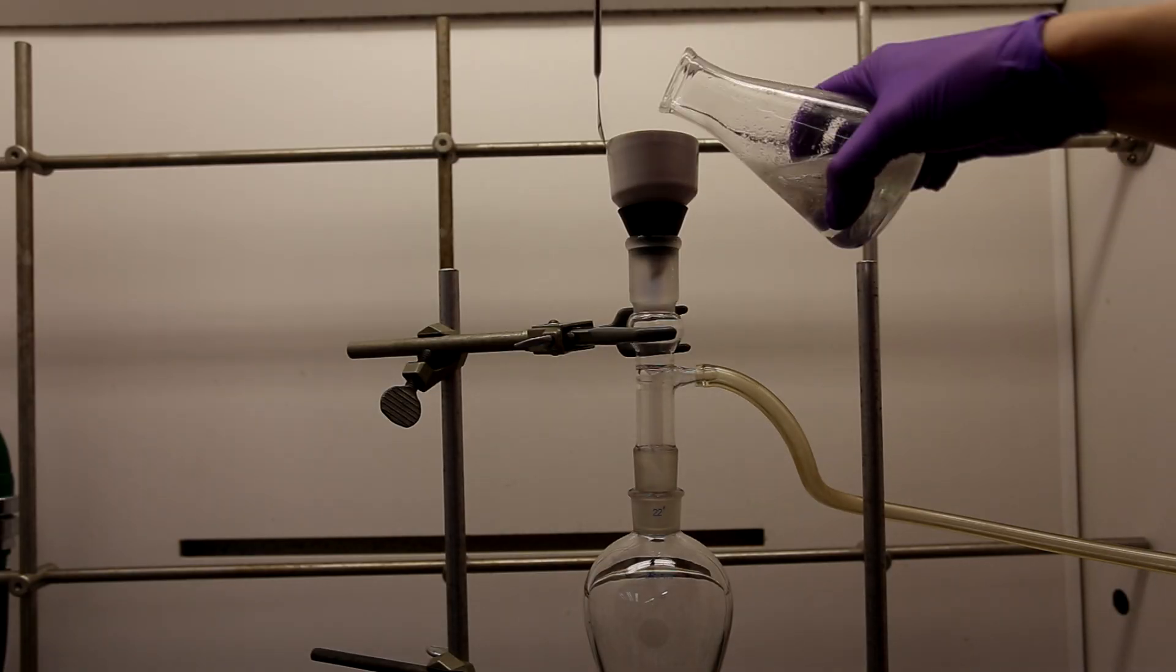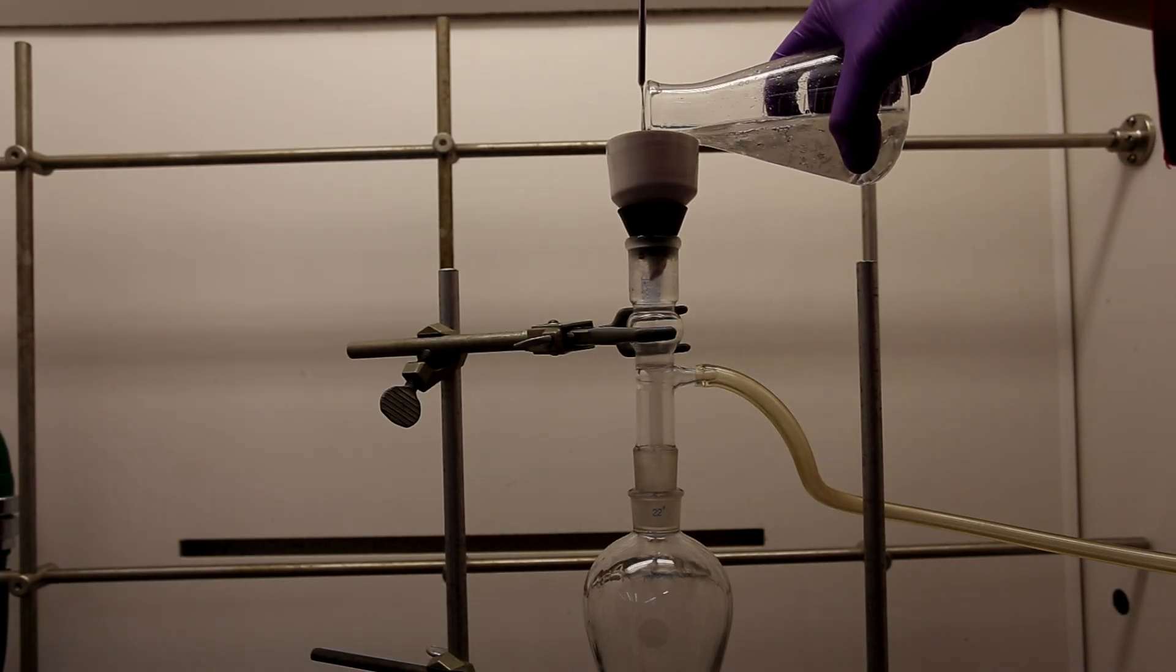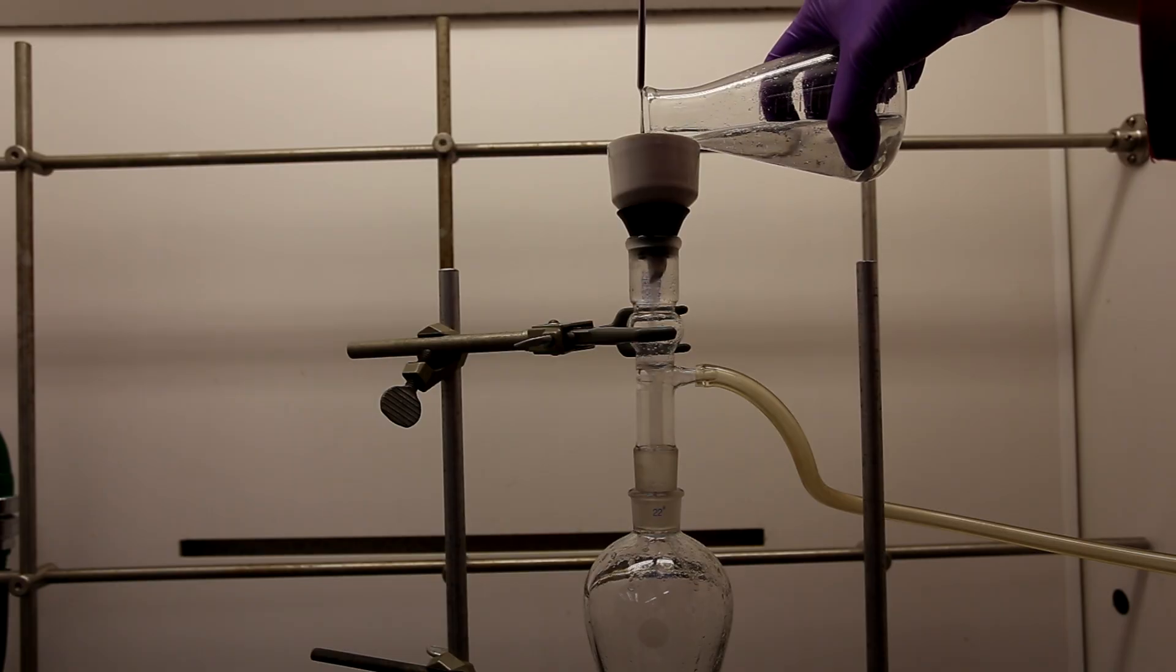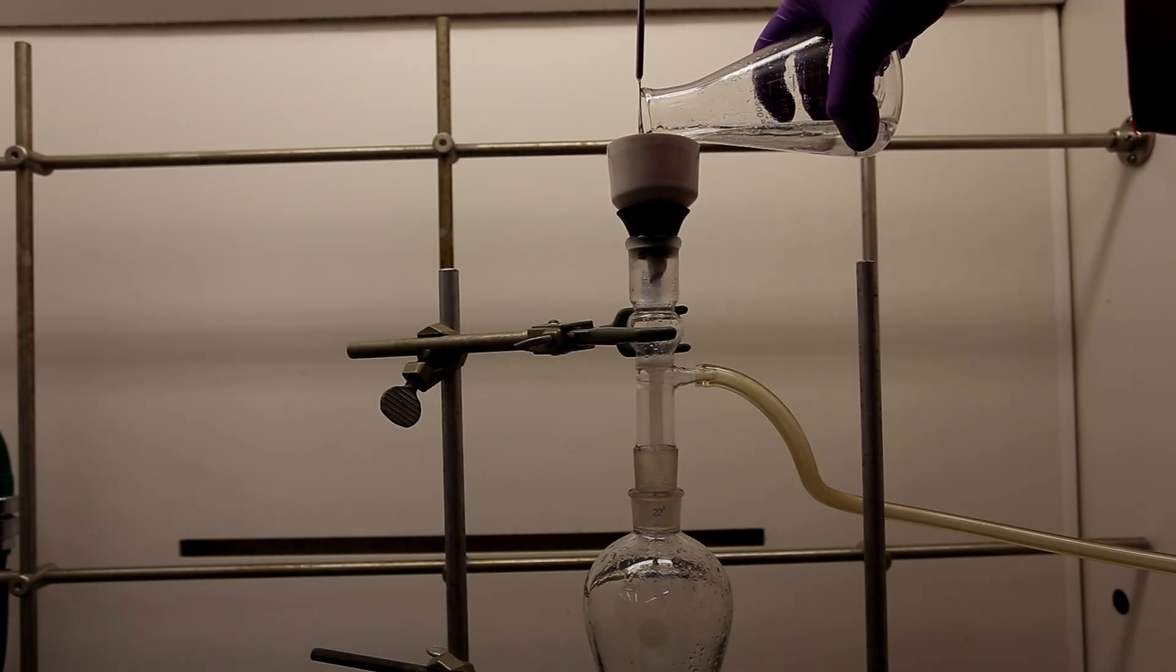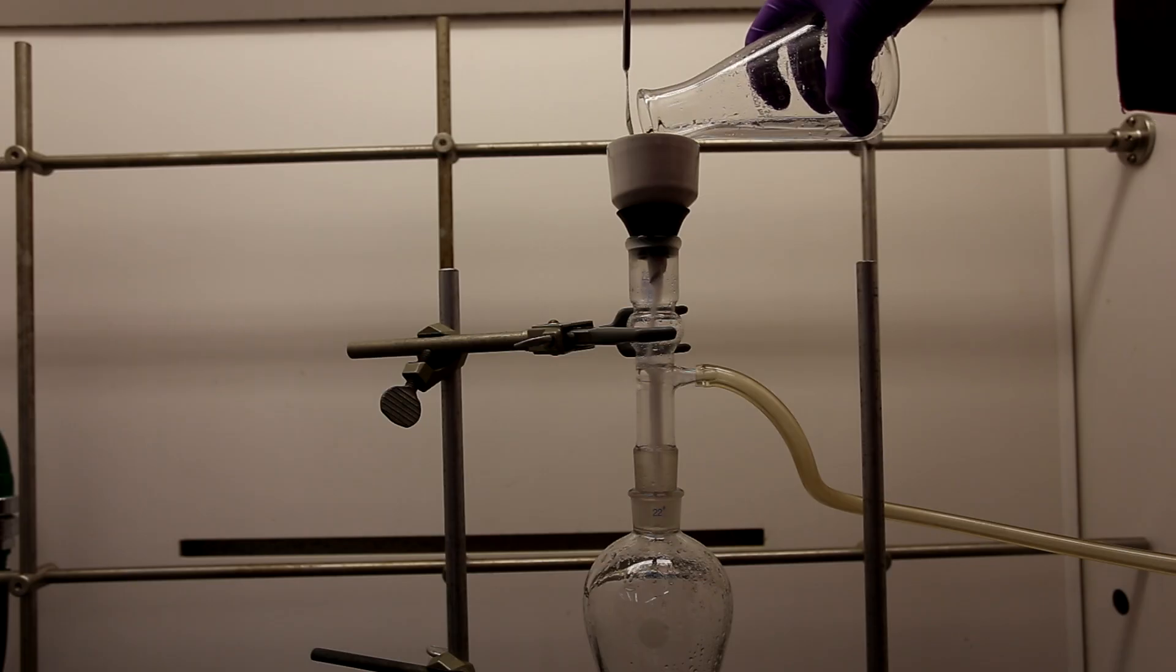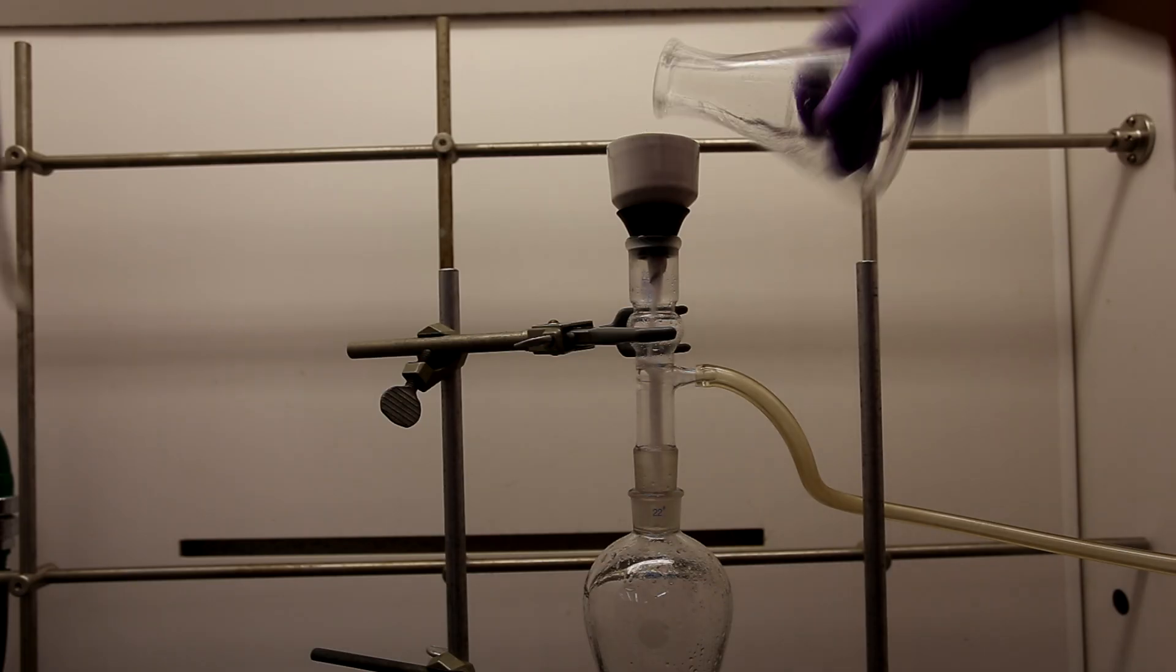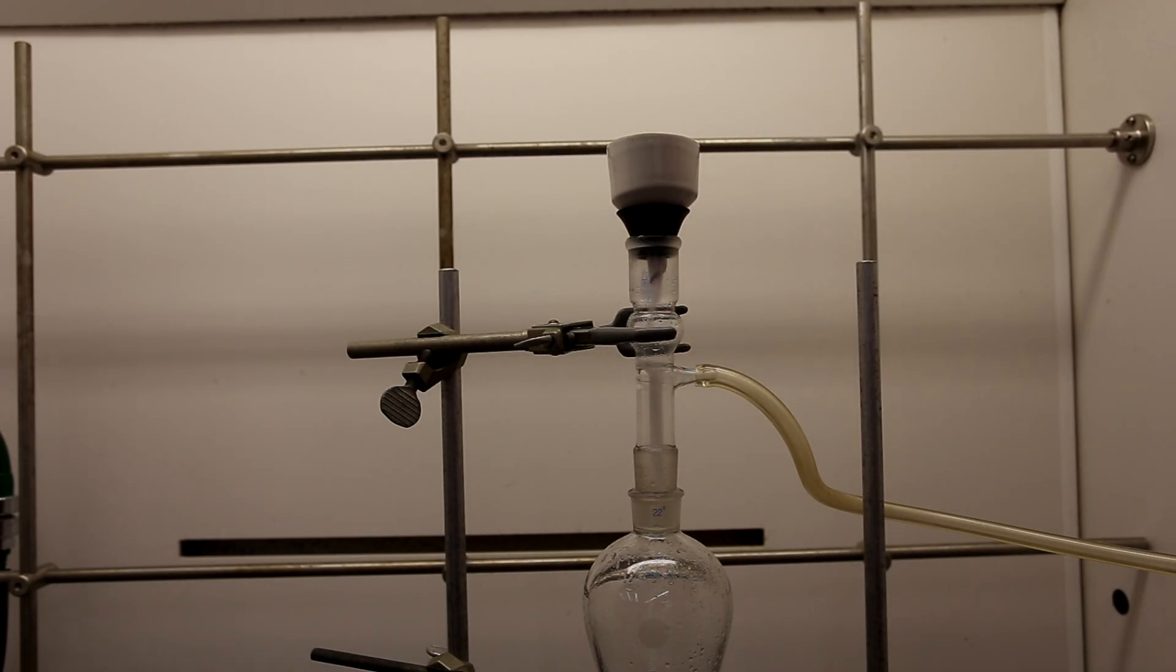Then, I directly vacuum filtered the solution into a separatory funnel. This step is necessary to remove any unreacted magnesium metal, but you definitely don't need to use the same setup that I did. Directly vacuum filtering into the separatory funnel just saves a few steps.